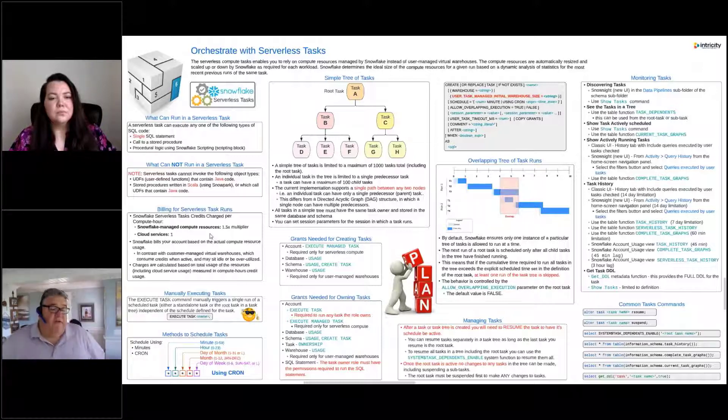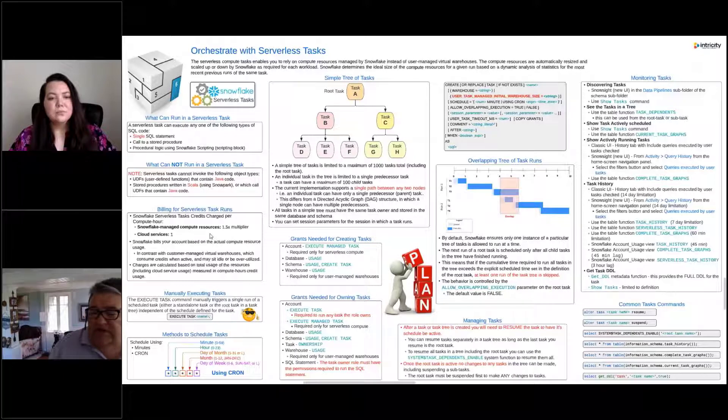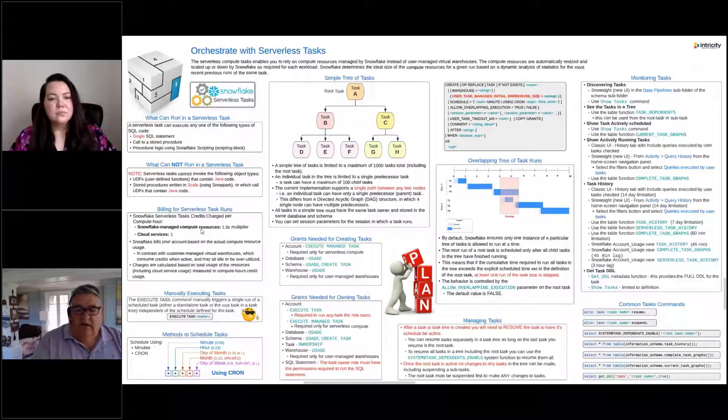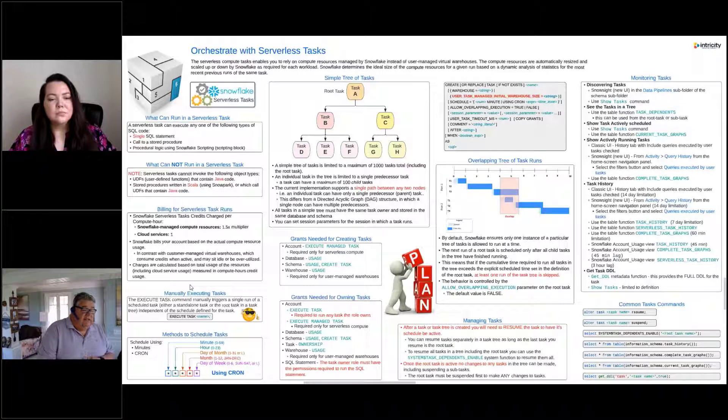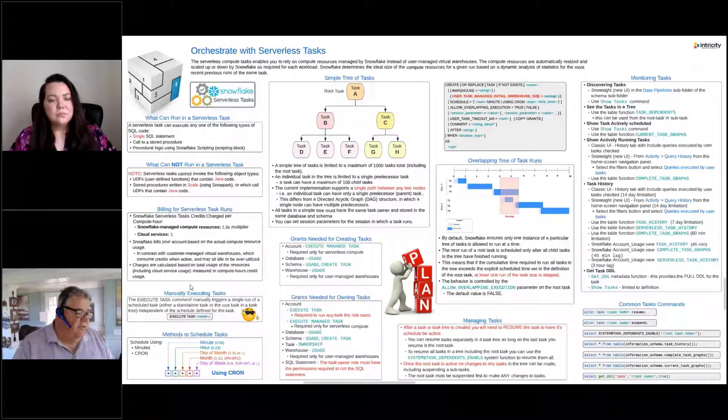If you set up a task, we can schedule the tasks, but we can also manually execute a task. This wasn't always the case. When we first had the ability to create tasks, if we wanted to test that task out, we had to schedule it to run in a minute. Now we can actually manually execute a task. So any tasks that we create, we can run, and I'll show you using the execute task command when we jump over to Snowflake in the demo.